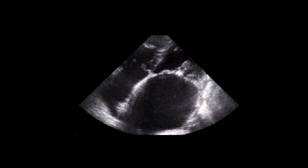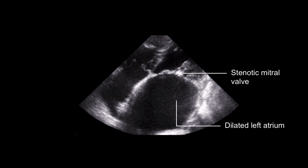Mitral stenosis affects other parts of the heart too that can be seen on echocardiography. This is primarily related to the significant increase in left atrial pressure occurring as a consequence of the valve obstruction. Left atrial dilatation occurs as a consequence of the chronic elevation of left atrial pressure.